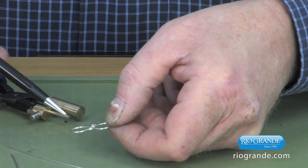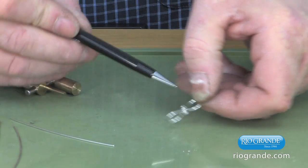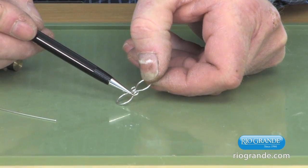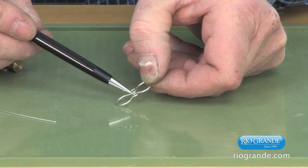After I formed the S-hook, then I hard soldered the small eyes closed on each end of the eye.